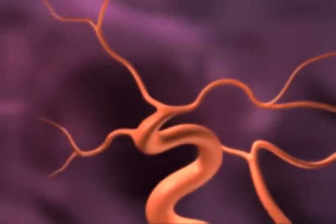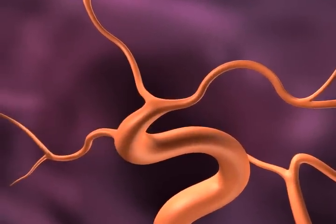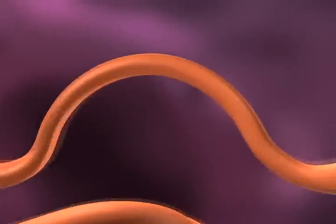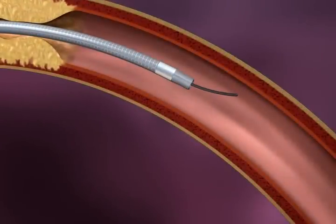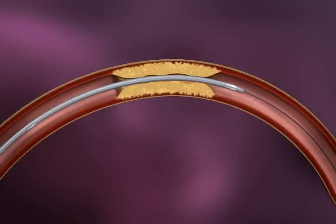The Wingspan Stent System is designed to access tortuous neurovascular anatomy. Use a .014 inch exchange length guide wire to cross the stenosed lesion. A microcatheter can be used to obtain access if desired.